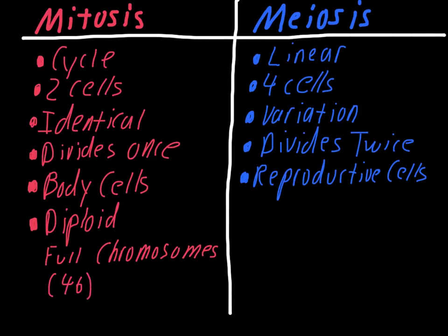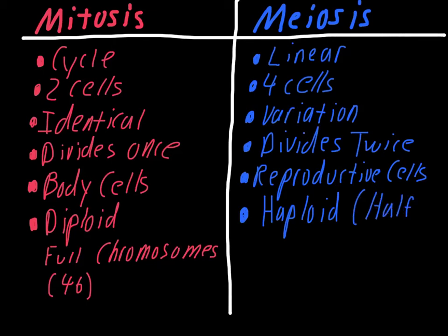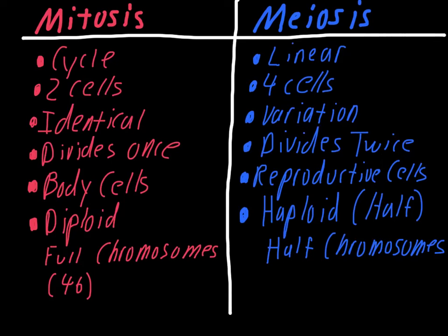For meiosis, you end up with a different kind of cell. These are referred to as haploid. I always think of haploid as meaning like half — similar to the word 'half' — so you've got half the original amount of chromosomes. This is useful for reproduction because you get 23 chromosomes from mom and 23 chromosomes from dad, giving you a full set of 46. So in people, we end up with 23 chromosomes in the cells used in meiosis. Keep in mind, the number is going to vary for different species.